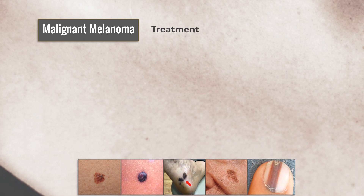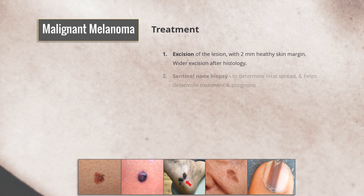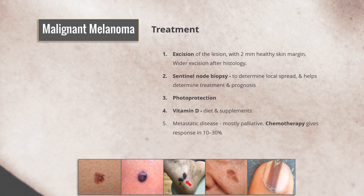For treatment, excision of the lesion with a 2 mm healthy skin margin is performed. After histology, wider excision is carried out. Sentinel node biopsy is sometimes undertaken to determine local spread, which helps determine treatment and prognosis. All patients should be advised regarding ongoing photoprotection, and it is also prudent to optimize oral vitamin D through diet and supplements. Treatment options in metastatic disease are mostly palliative. Chemotherapy gives a response in 10–30% with metastatic disease. Ipilimumab, a human monoclonal antibody, has been shown to improve survival in patients with metastatic melanoma.